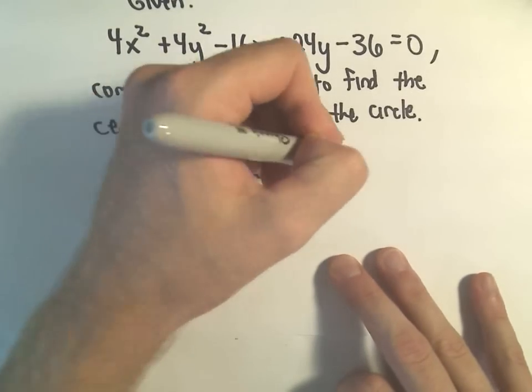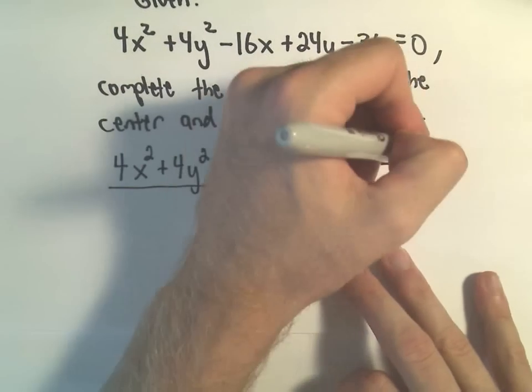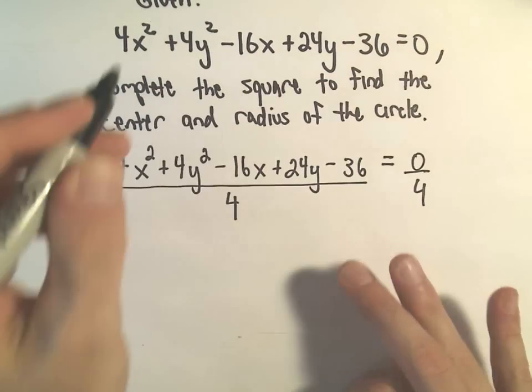So that's the very first thing I'm going to do, is I'm just simply going to divide everything on the left by 4, so we have to also divide the right by 4.